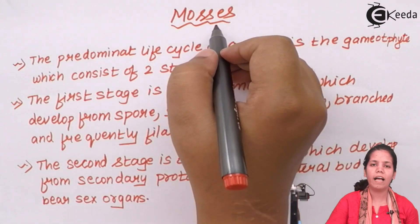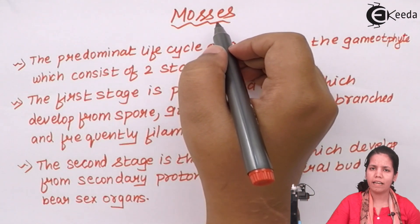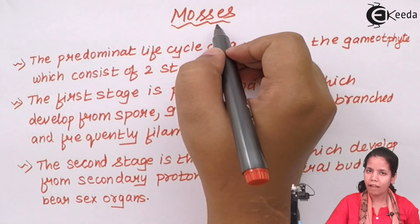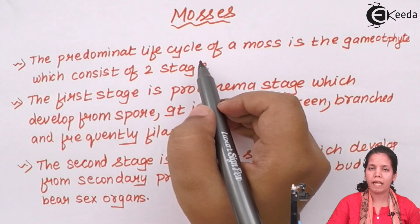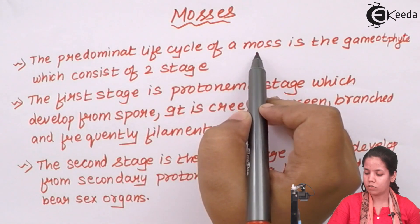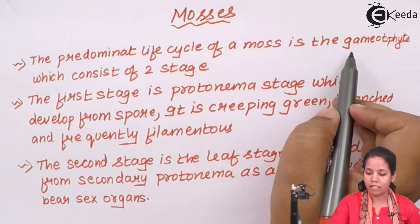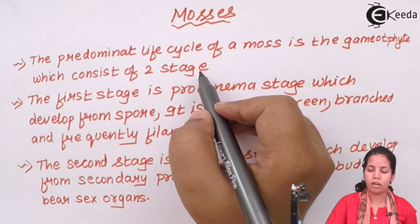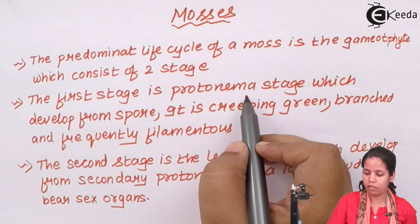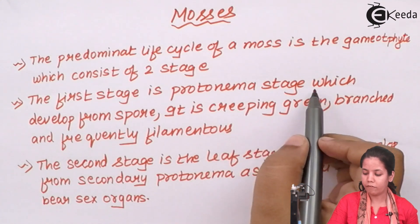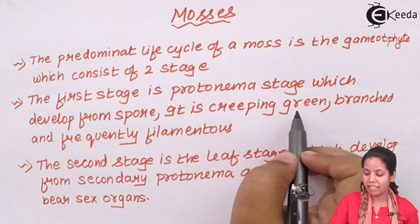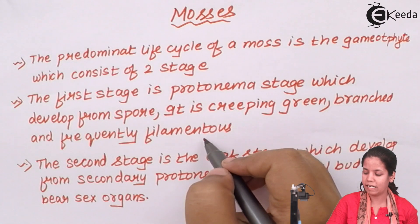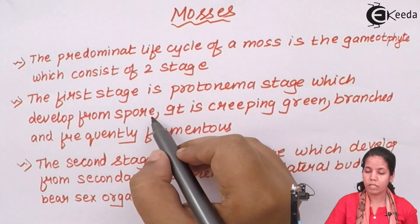Mosses are a type of bryophyta — the plant that grows on mountains with very similar features. The bryophyte family consists of Mosses. The life cycle of Mosses consists of a gametophyte stage, and this gametophyte stage is made up of two different stages. Gametes are reproductive cells. The first stage is termed the protonema stage, which develops from the spores. It is green in color, branched, and frequently filamentous. The protonema stage of the gamete is basically creeping and can undergo spore formation in later stages of life.